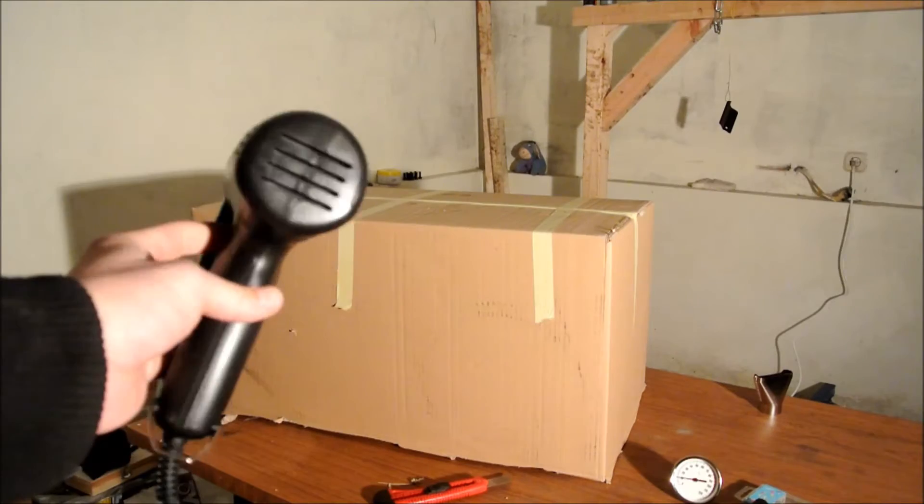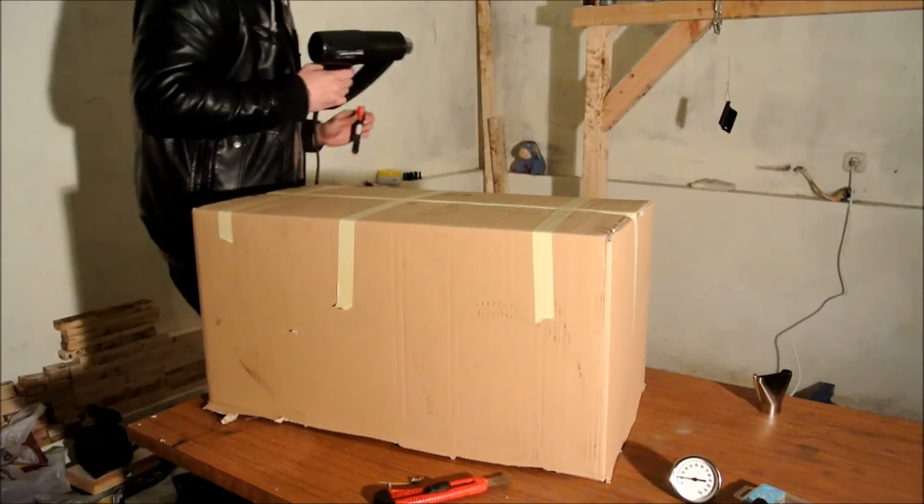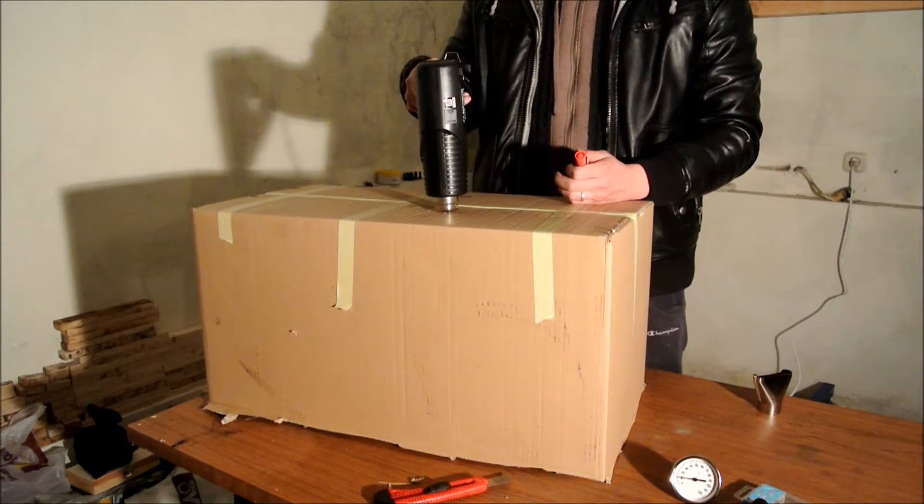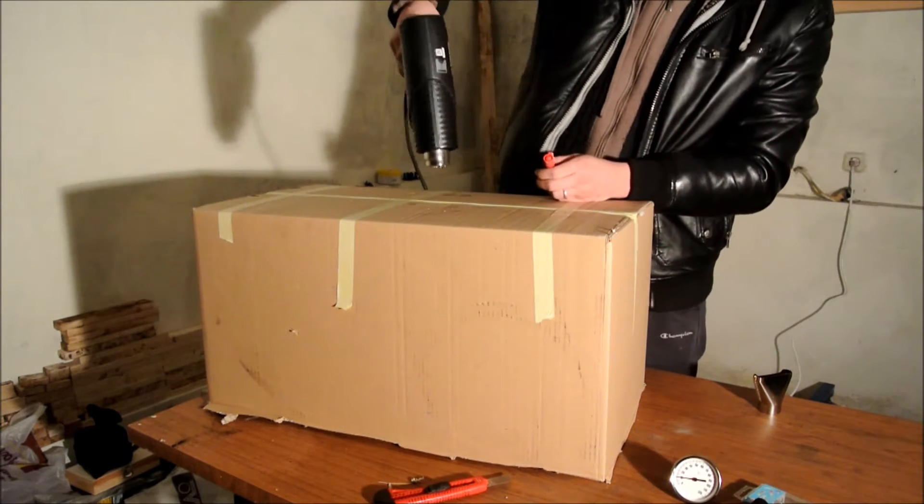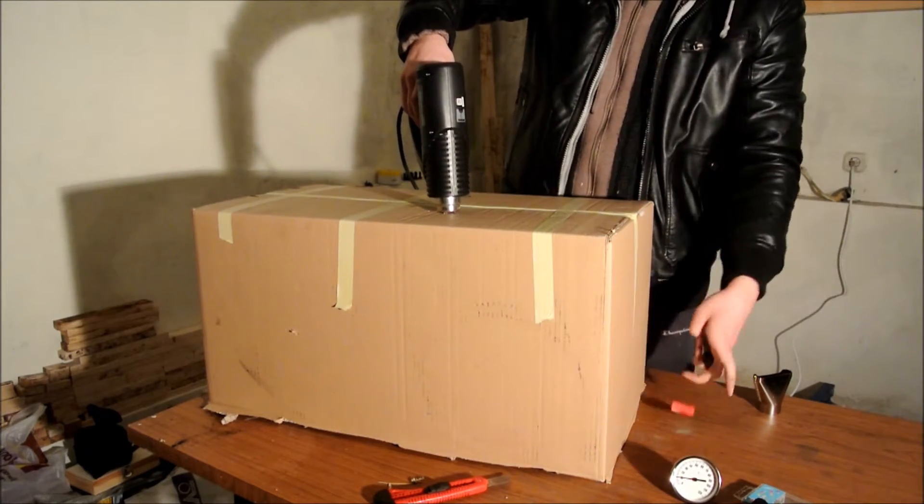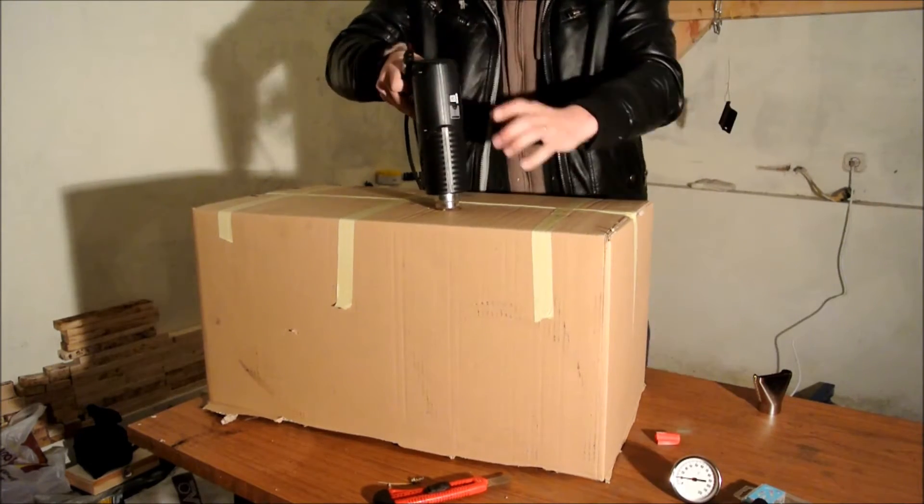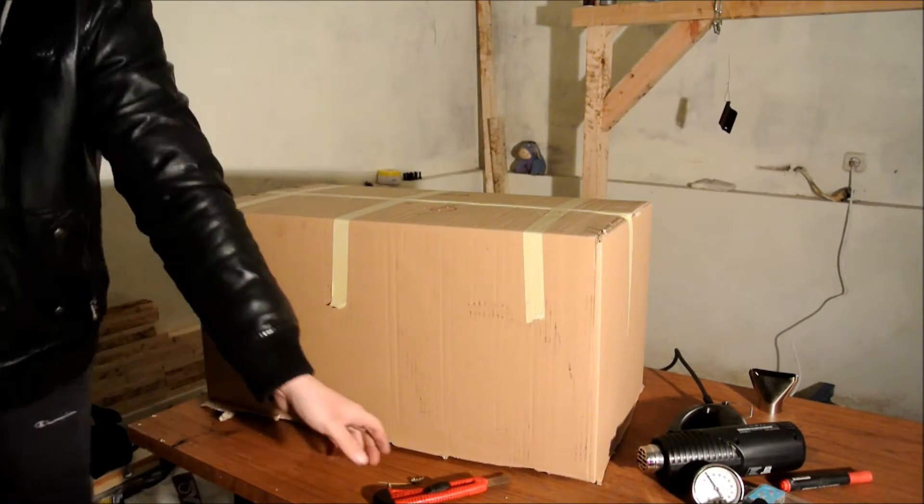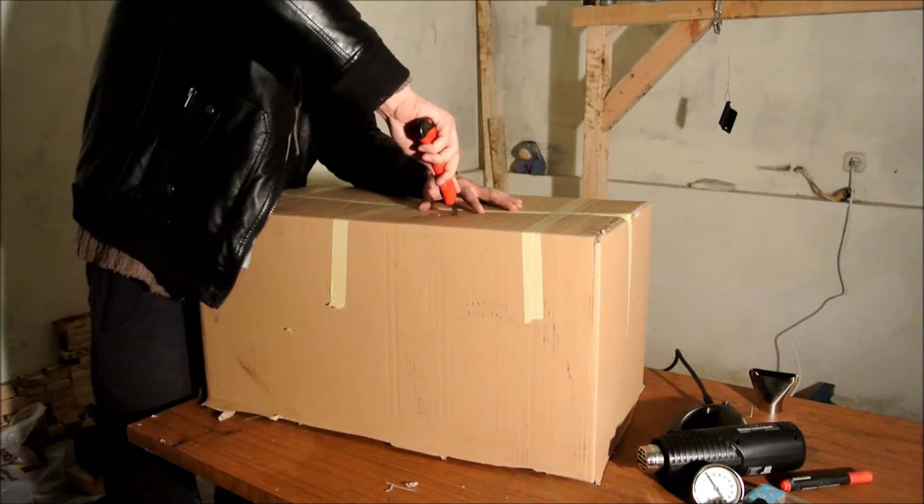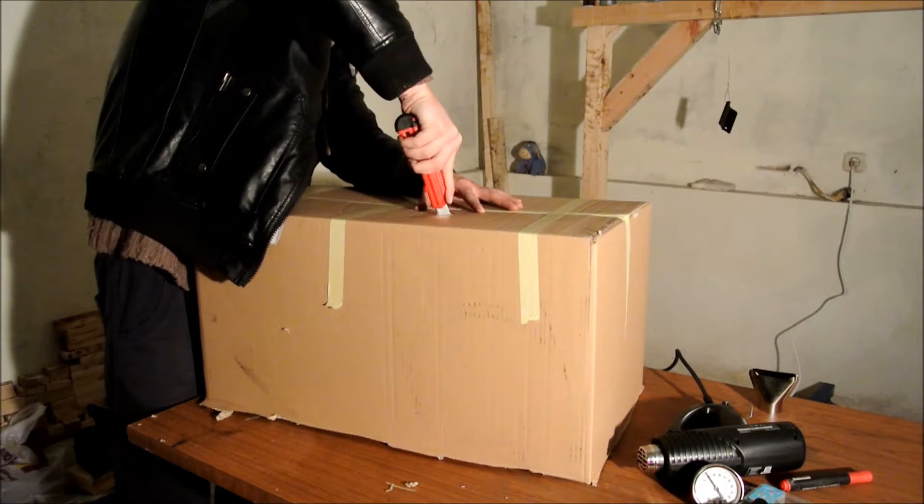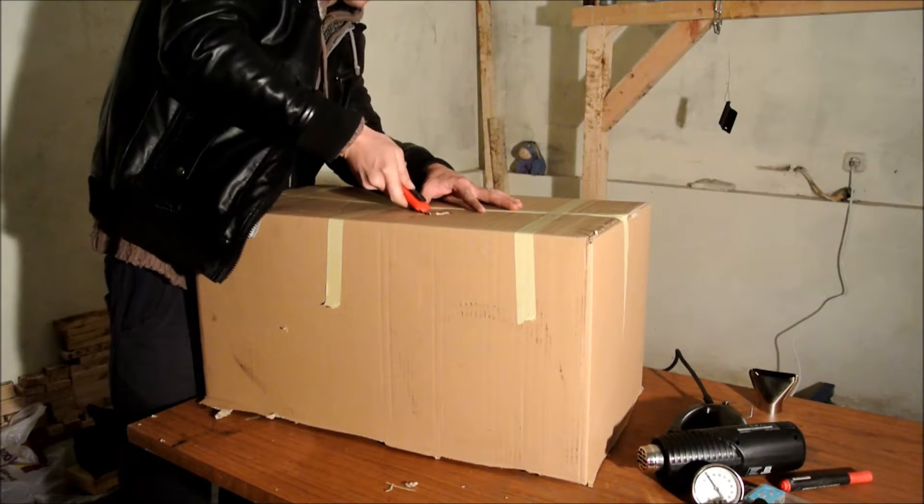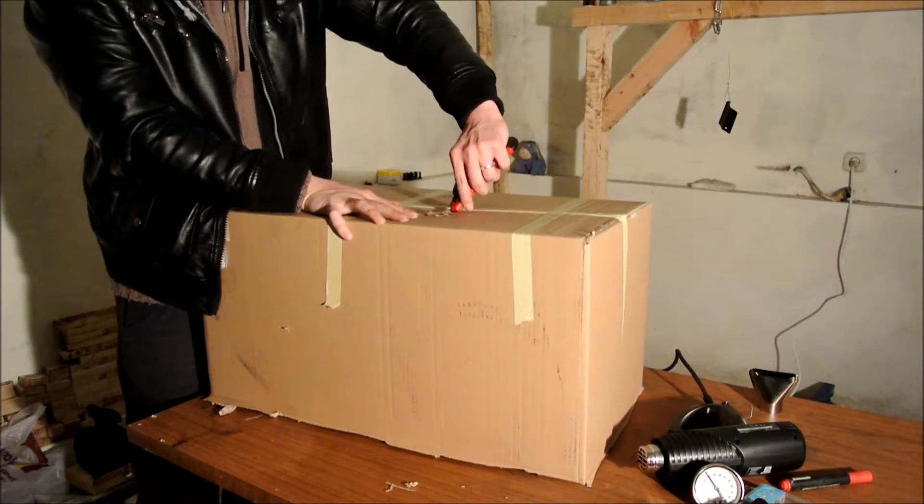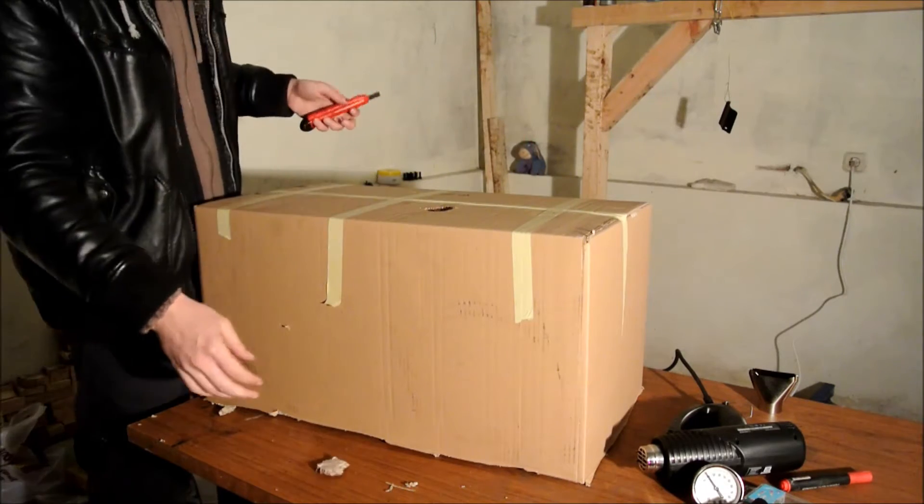The next step is going to be to take your heat gun. I am going to be inserting my heat gun into the box from the bottom. What you are going to do is take your heat gun, take a marker and basically trace through. You can then take a putty knife and cut out the circle.